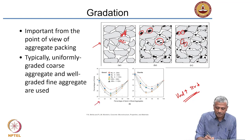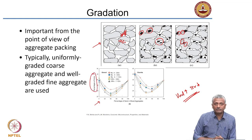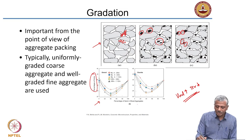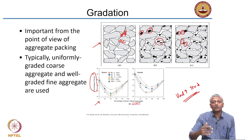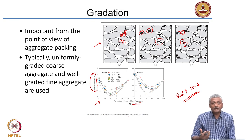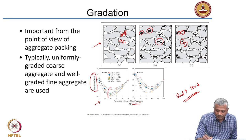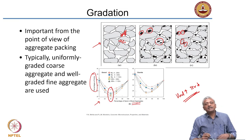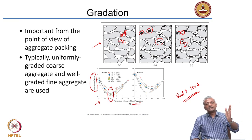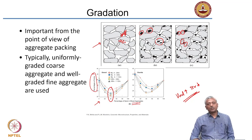Looking at this experiment, the percentage of voids is plotted on the y-axis against the percentage of sand in a mixed aggregate. They have taken coarse aggregate and sand, and found that at 40 percent sand (60 percent coarse aggregate), you get the lowest percentage of voids.